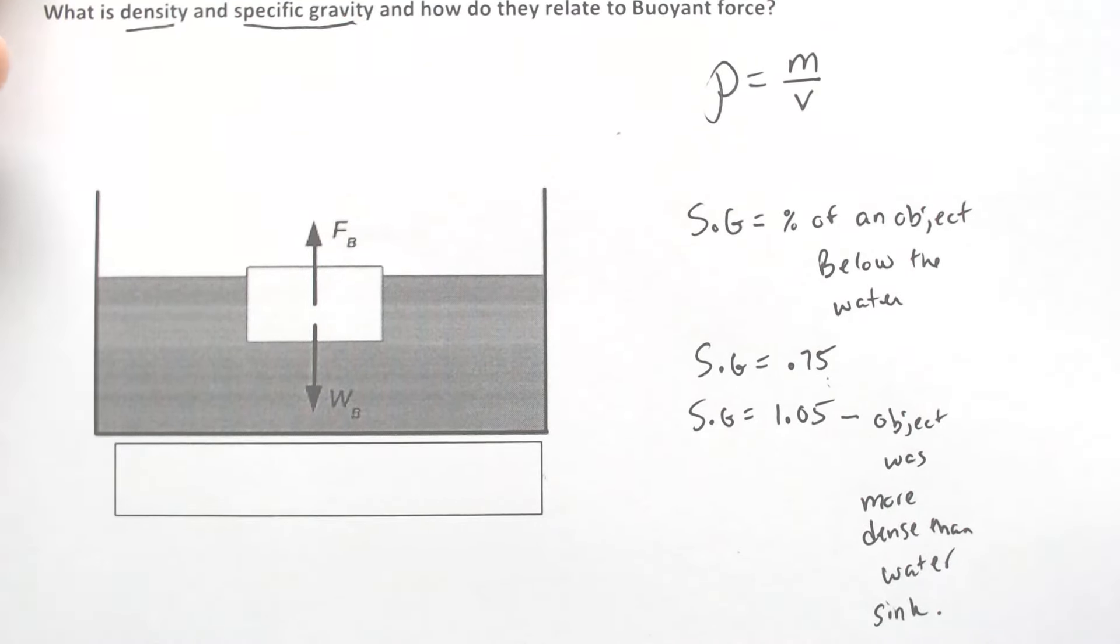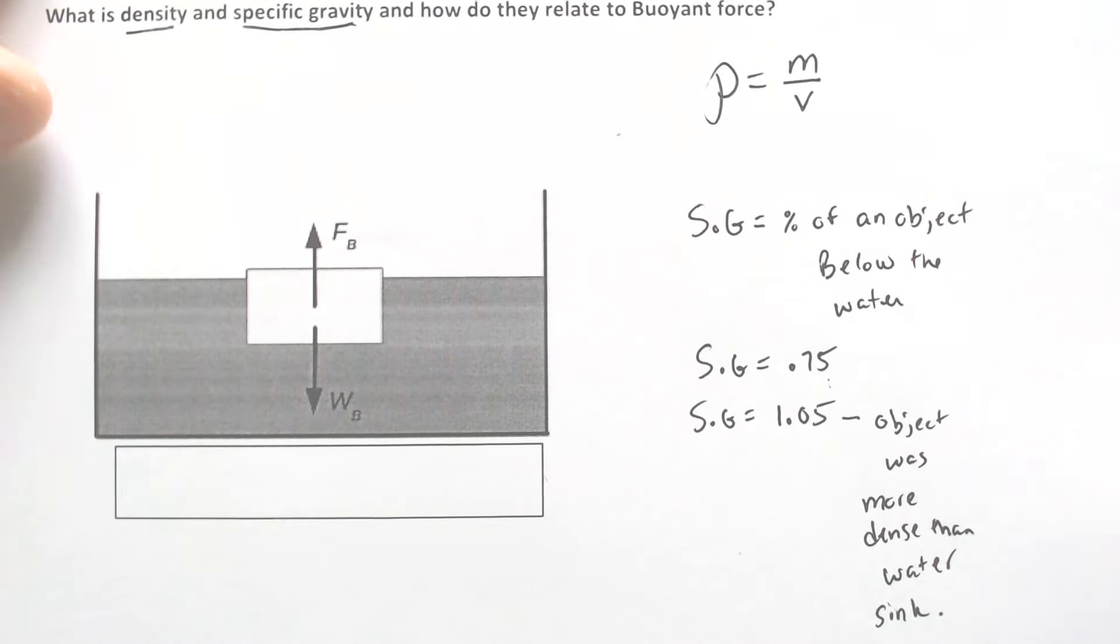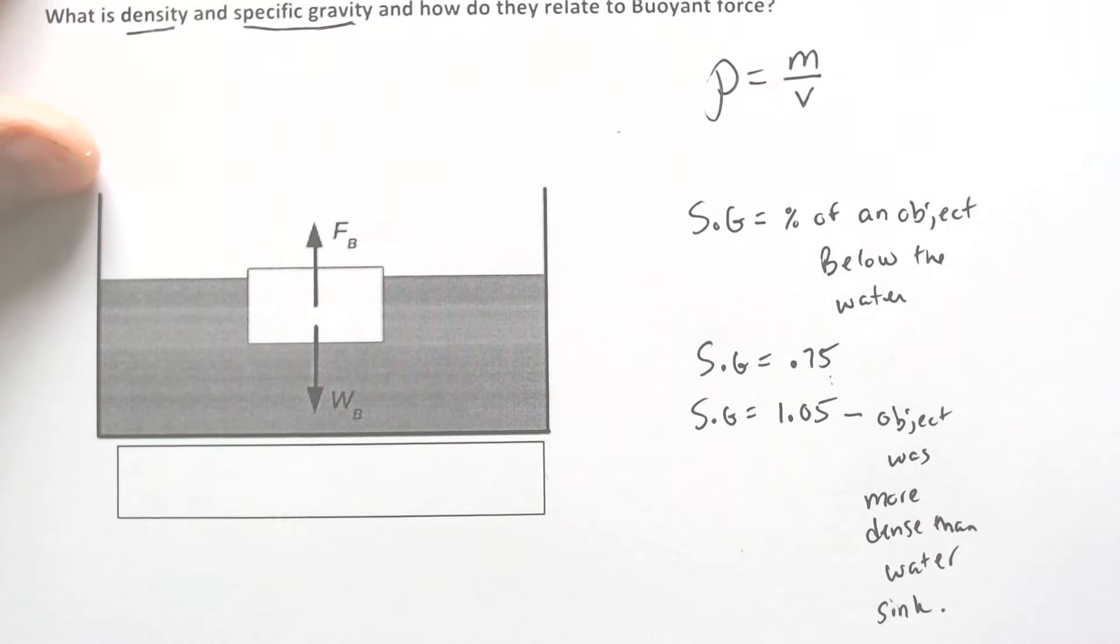And that's not good for things that you would like to float. So specific gravity is going to tell you the percent of an object that is below the water.